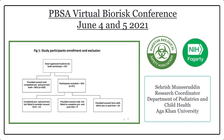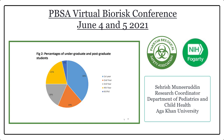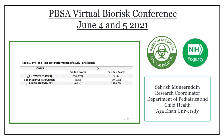Figure 1 shows the total registered students for both workshops, which was 357, of which 90% provided consent and completed pre- and post-test questionnaires, whereas 10% were excluded because they failed to give consent or complete the questionnaires. The next figure shows the percentage of undergraduate and postgraduate students, where the maximum number of students belonged to first year, followed by second and third year. In the pre-test scores, almost 98% of students were low performers, whereas in the post-test, 87% of students scored more than 16 and became high-performing students post-workshop.